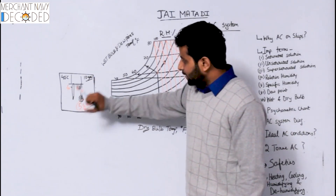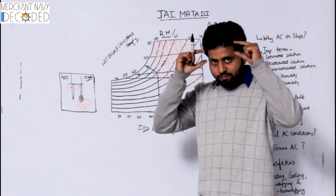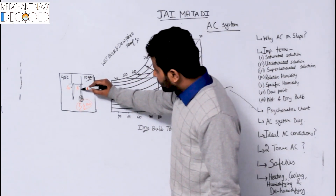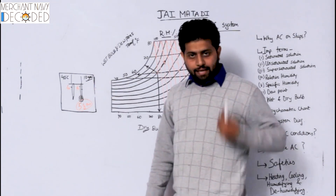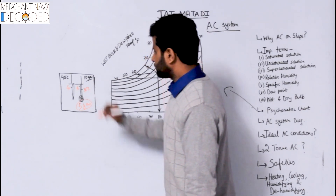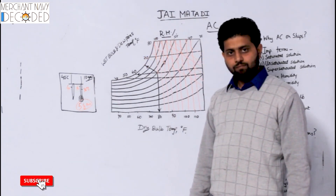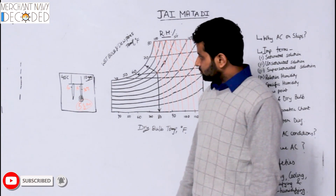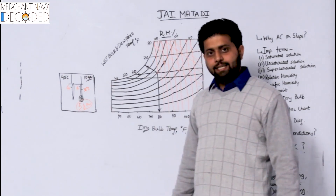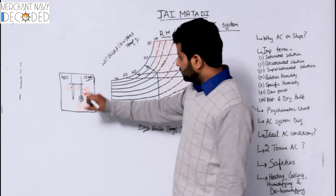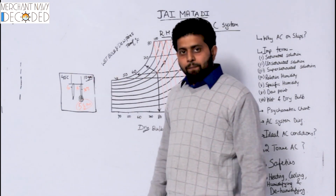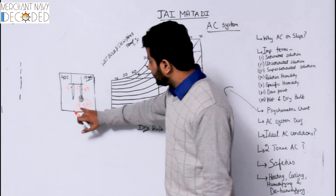When this water vapor starts evaporating — like the fever and the water-soaked cloth on our forehead — the temperature of this thermometer will come down, and it will become 35 degrees centigrade. Now suppose another case: the room temperature is 40 degrees centigrade and the maximum moisture the air can carry is 10 grams, but the amount of moisture in the air is actually 10 grams.